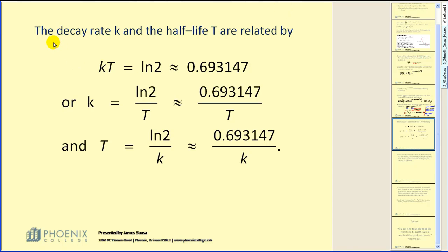So there's a shortcut for finding the decay rate and the half-life, t. As we discovered in the previous problems, k times t was equal to natural log two.